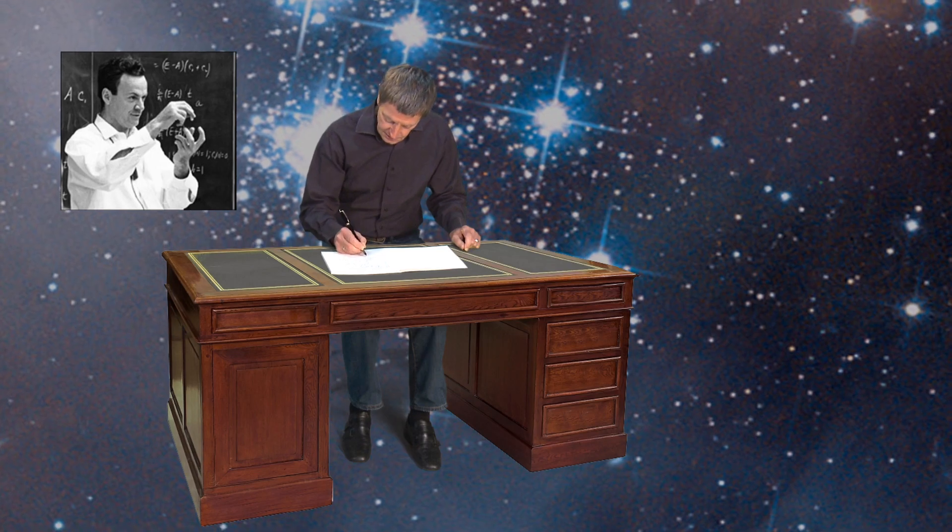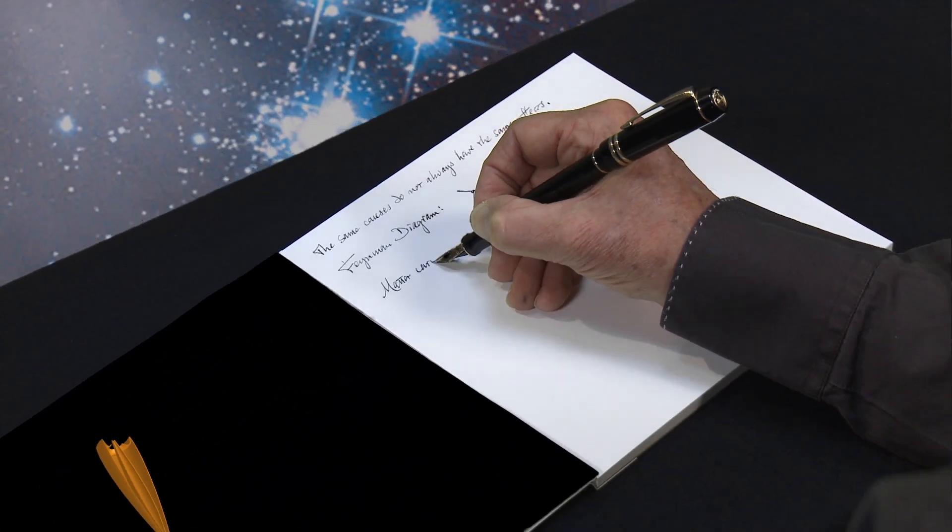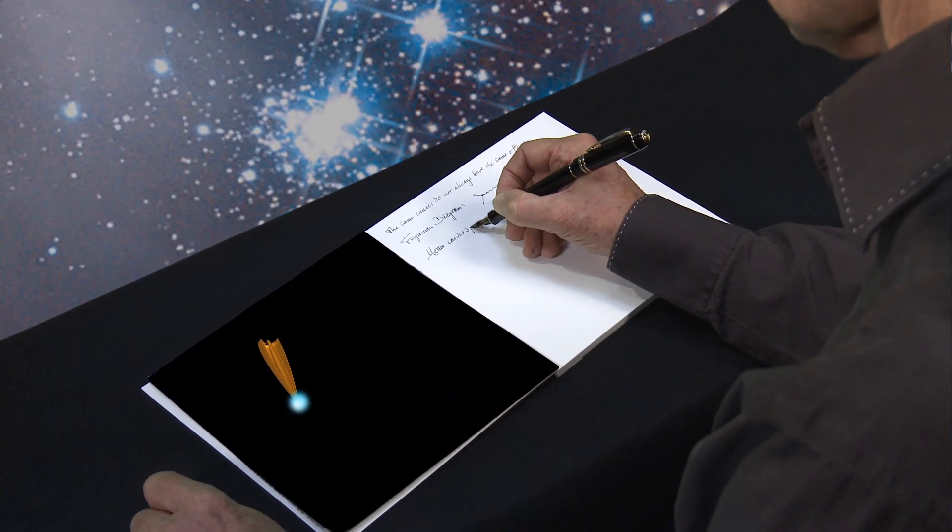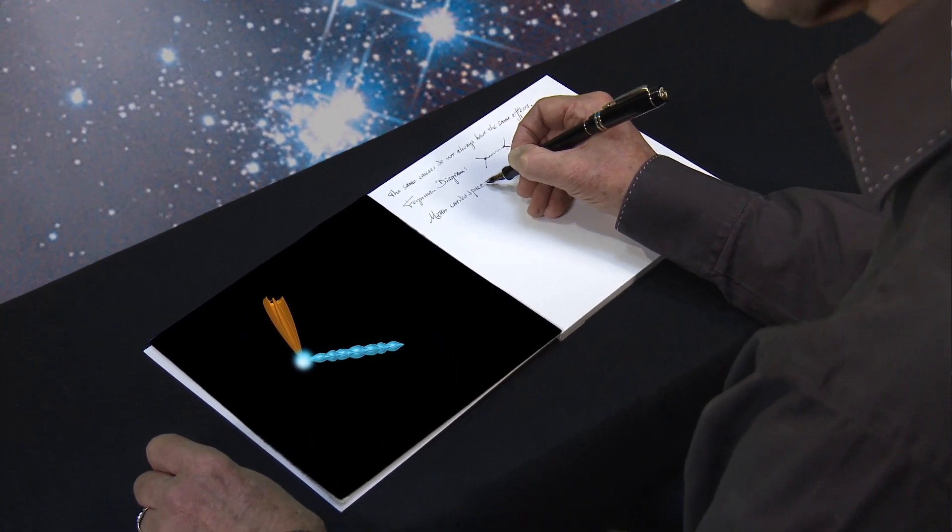His Feynman diagram. The universe is made of particles, space and time. But how are these three connected?